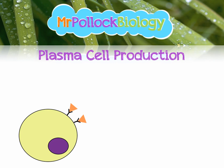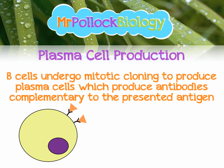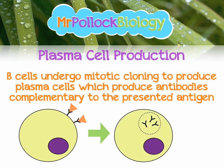Plasma cell production is really key. These are the cells that produce the antibodies that are going to go on to kill infected cells. This is stimulated again by helper T cells. B cells undergo mitotic division — cloning by mitosis — to produce plasma cells, which produce antibodies that are complementary to the presented antigen on the B cell. And there are the antibodies inside the plasma cell, ready to be released.